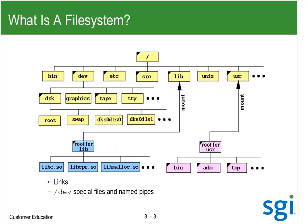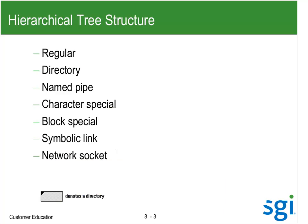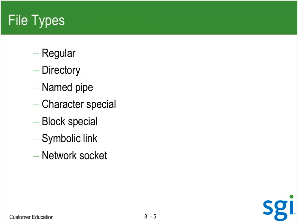File types: regular files show as a dash with ls -l. A directory is d. A named pipe is p — things like PBS and Qsub use named pipes. Character devices like terminals and tape are c. Disk drives or blocked, sectorized devices are b. Symbolic links are l. Network sockets are s — things like arrayd use network sockets as well.